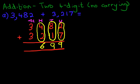And lastly we're going to do the thousands column. 3 plus 3. So what is 3 plus 3? The answer is 6.